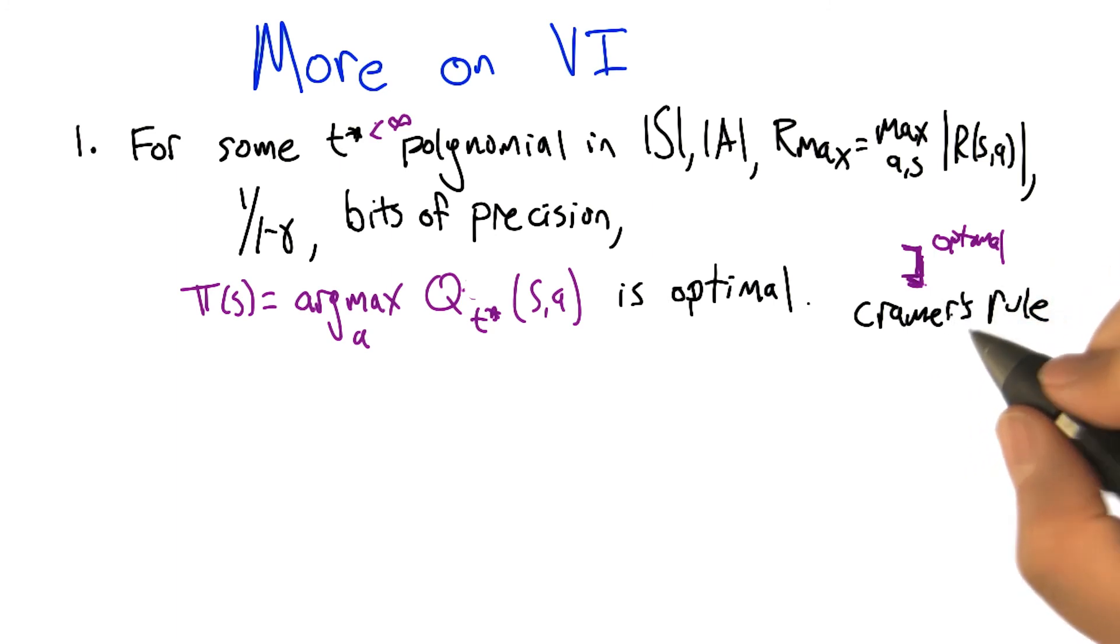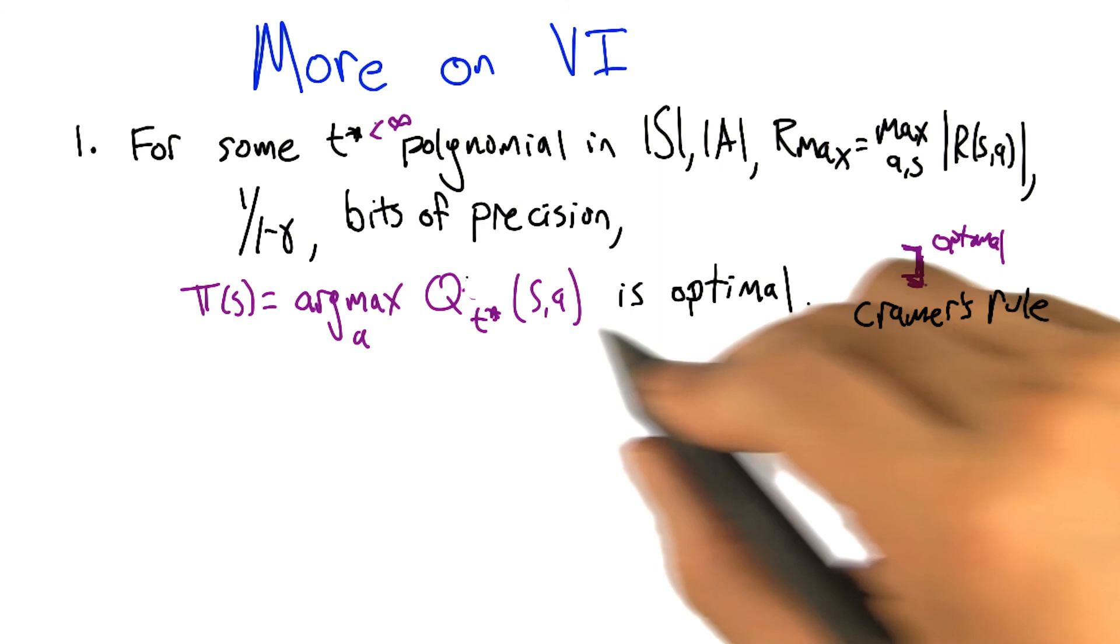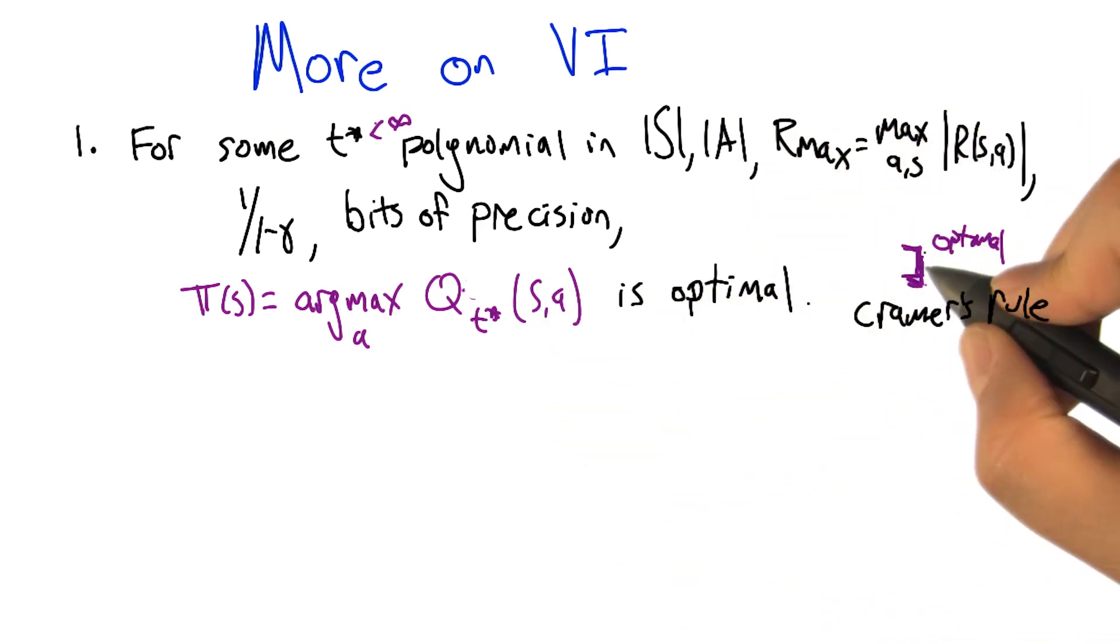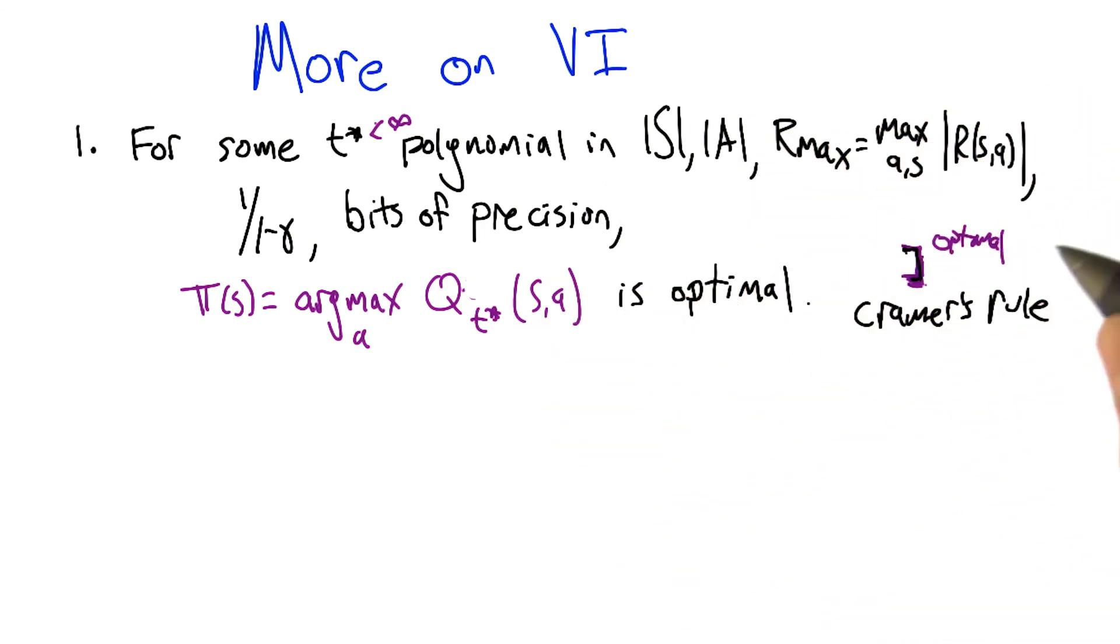This turns out to be a consequence of Cramer's rule, which we're not going to talk about. But this is why, once we write down everything with polynomial precision, we are guaranteed to get some fixed size gap between the best and the second best. It's always amazing to me how you manage to get Seinfeld into our conversations. Kramer rules.